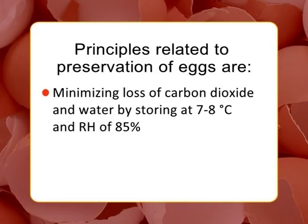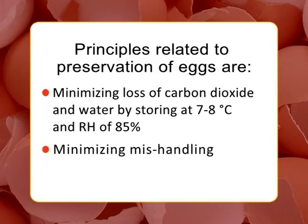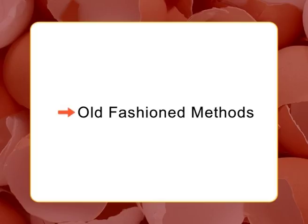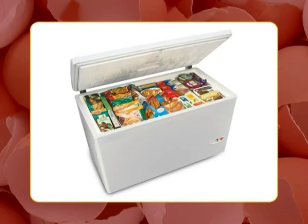Principles of preservation of eggs include: minimizing loss of carbon dioxide and water by storing at 7 to 8°C and a relative humidity of about 85 percent, minimizing mishandling, and maintaining shell cleanliness. Old-fashioned methods: Before the invention of refrigerators and freezers, farmers devised simple means of preserving their excess eggs. Some relied solely on salt, packing eggs in large barrels or crocks with plenty of salt and storing them in a cellar to keep them cool.